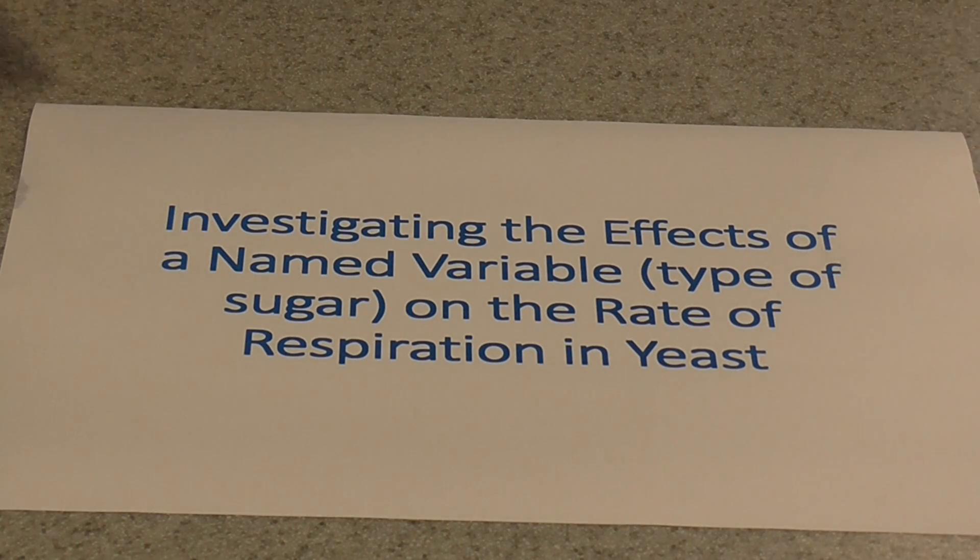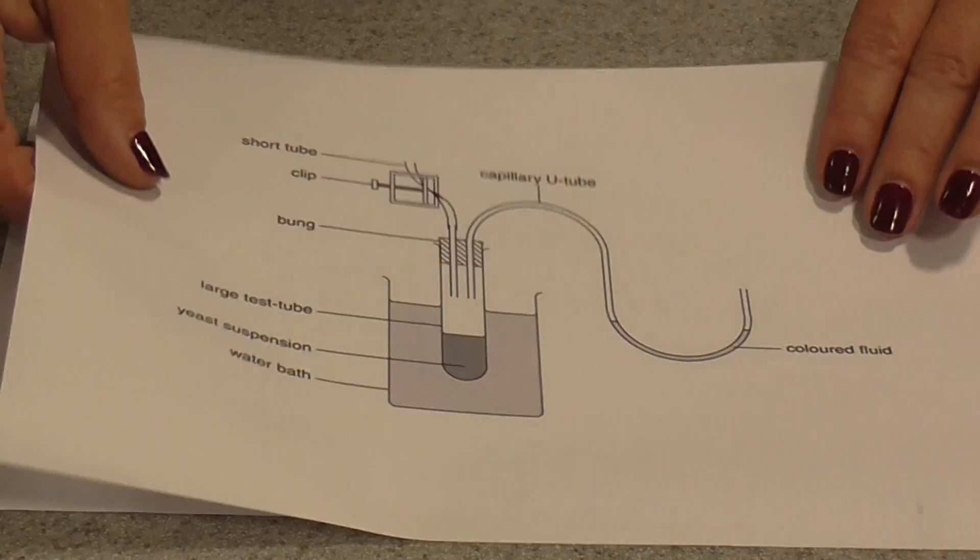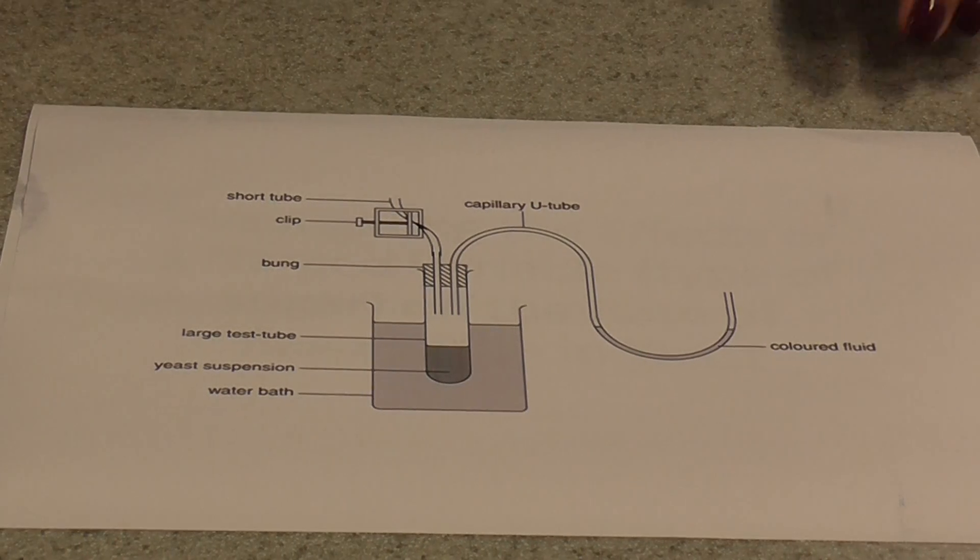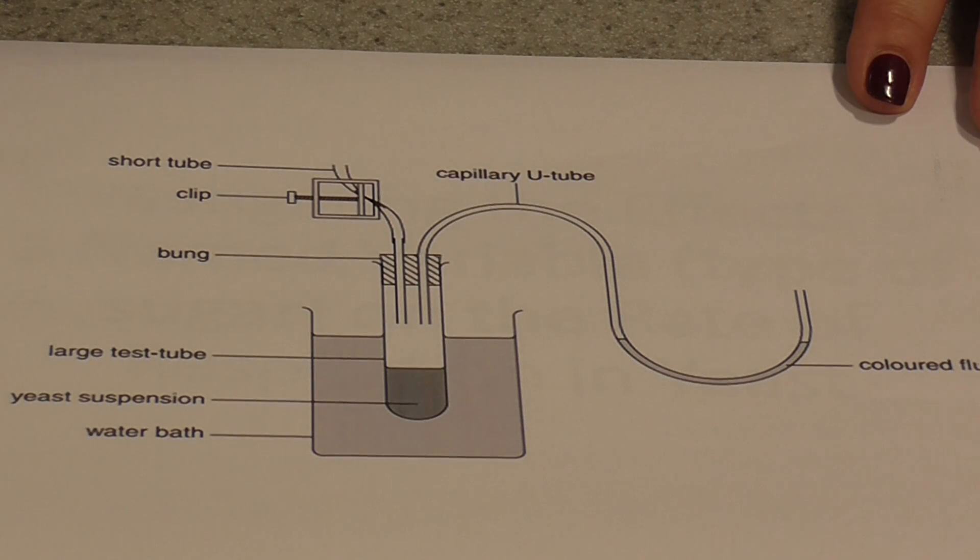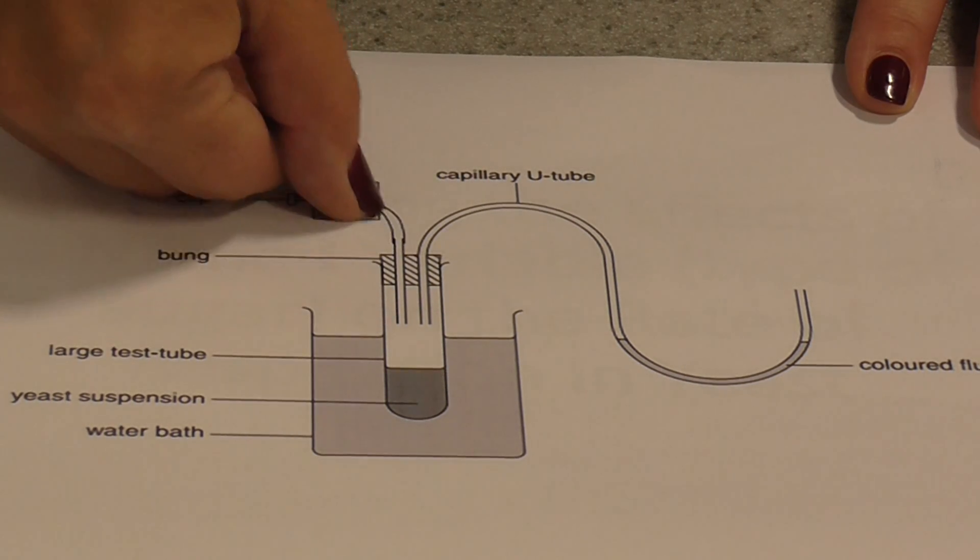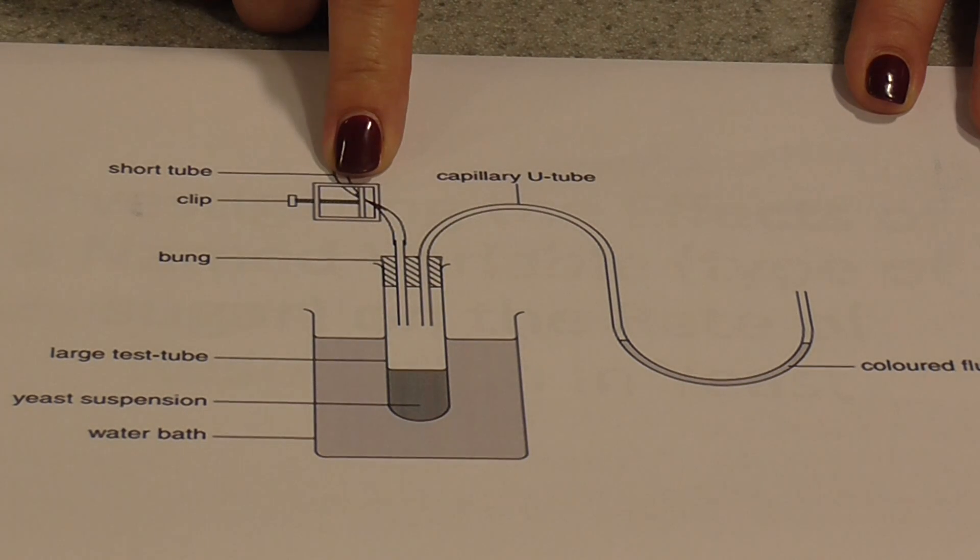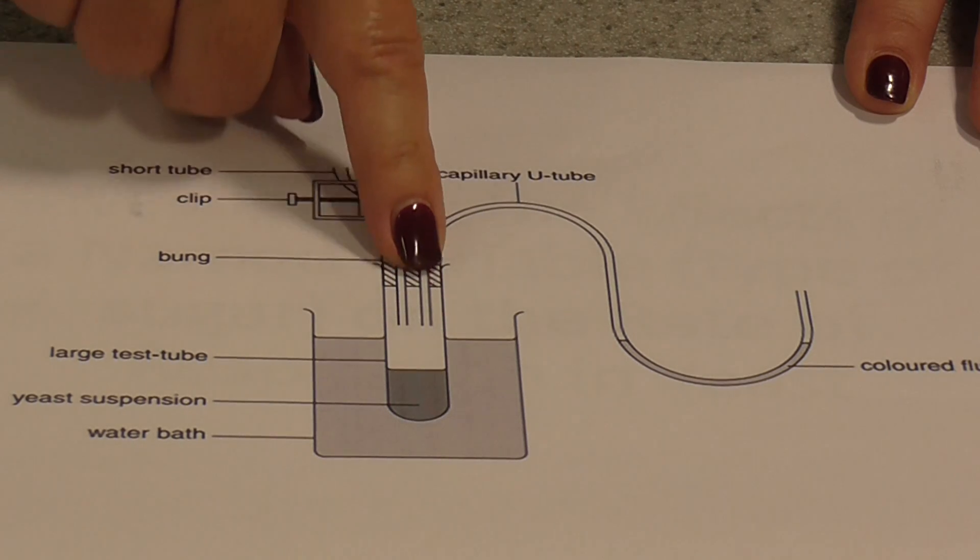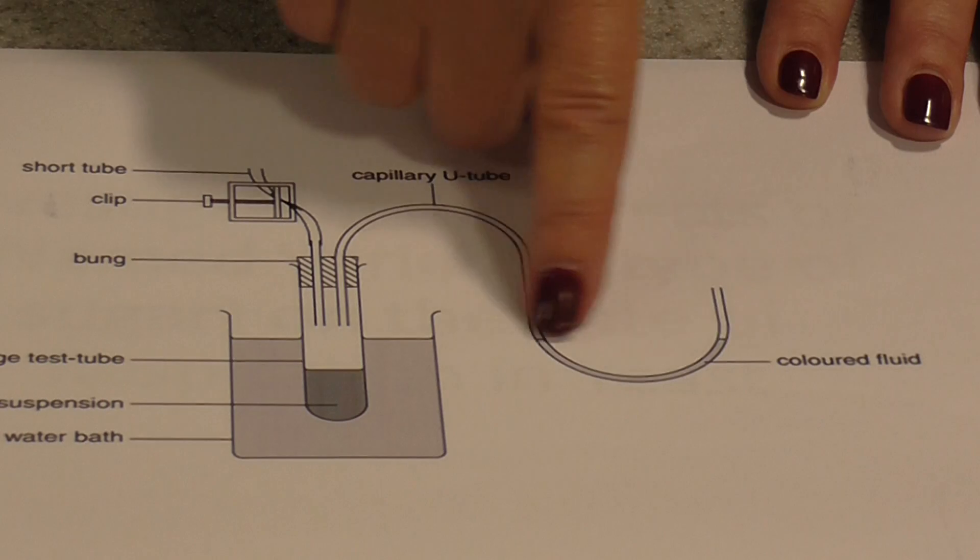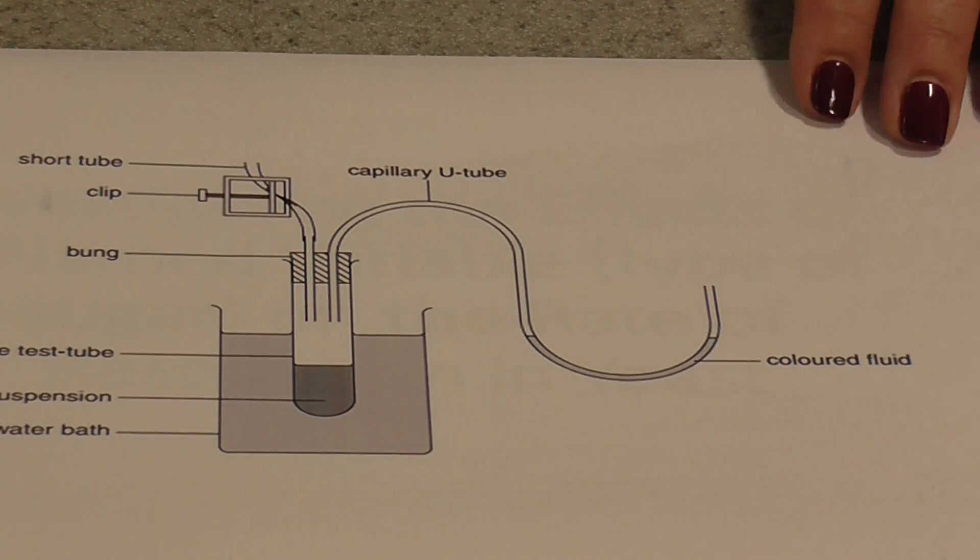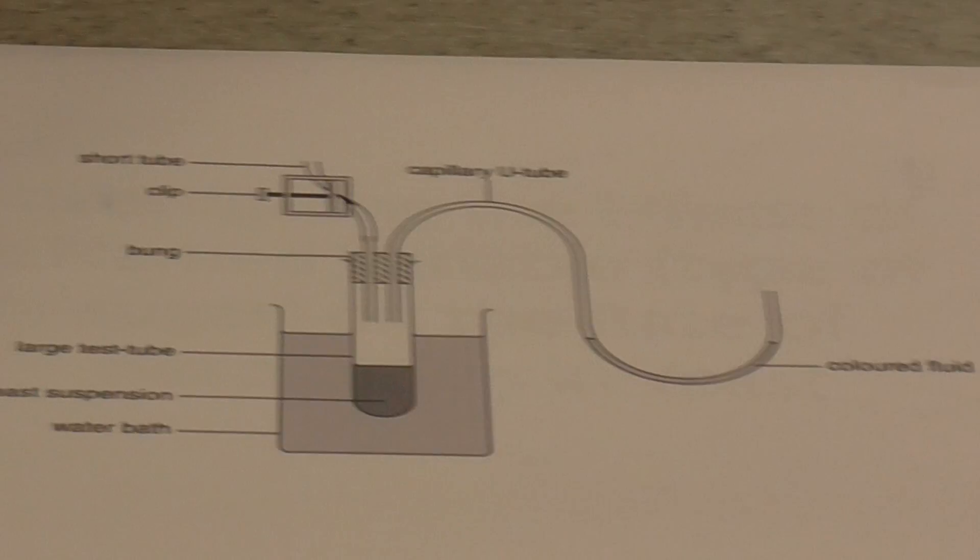Now then to carry out this investigation, this is the apparatus you will need. So you'll need a beaker just to use as a water bath, adjusting its temperature with hot and cold water. You'll need a number of boiling tubes, and you will need a bung with a flexible tube with a clip that can be opened and closed, and a plastic or glass capillary U-tube into which you've introduced a colored fluid. I have this apparatus here to show you, and we will use it in a minute.